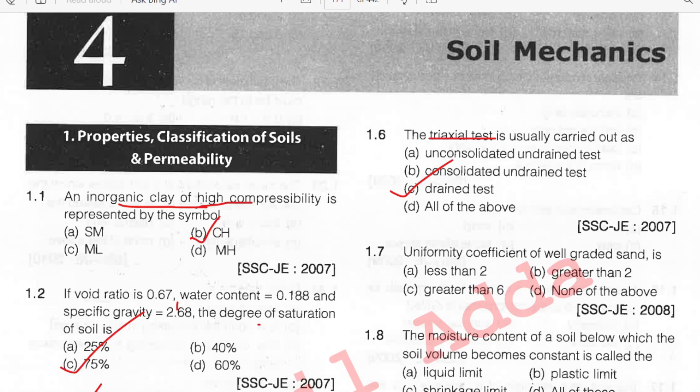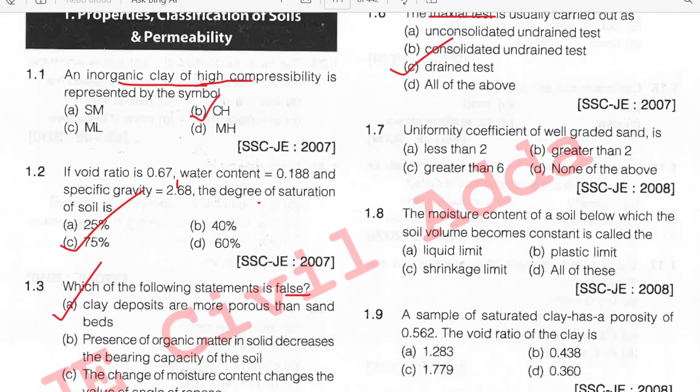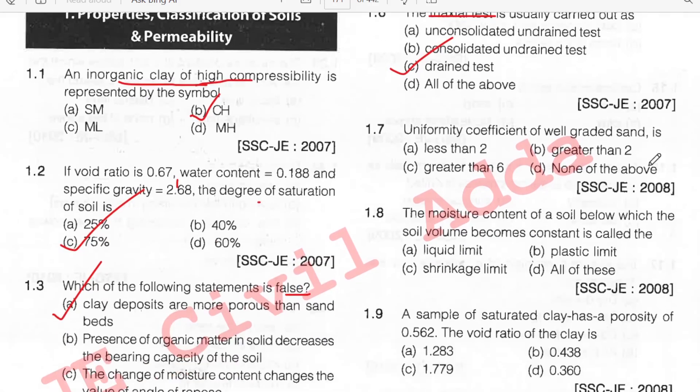Uniformity coefficient of well-graded sand — for well-graded sand the uniformity coefficient Cu is always greater than 6. Option C.